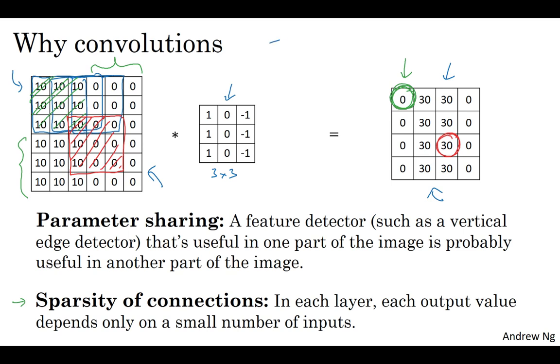And sometimes you also hear about convolutional neural networks being very good at capturing translation invariance. And that's the observation that a picture of a cat shifted a couple of pixels to the right is still pretty clearly a cat.